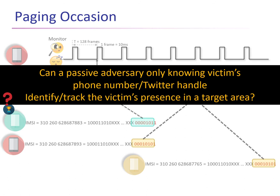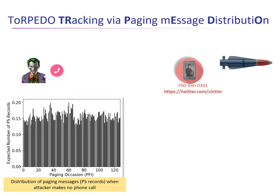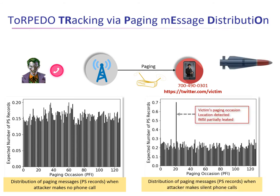The question in front of us is: can a passive adversary that only knows a victim's phone number, Twitter handle, or any social media account identify and track the victim's presence in a certain area? The answer is yes. This can be done using the torpedo attack. To execute it, an attacker generates silent phone calls to the victim's phone number or generates social media notifications so that the base station has to send paging messages to that cellular device. The attacker collects the distribution of paging messages when no phone calls are made, then collects the distribution when silent calls are being made. If a spike is noticed on a certain paging occasion, the attacker can conclude the victim is present in that area, and this also leaks the last eight bits of the IMZ of the cellular device.